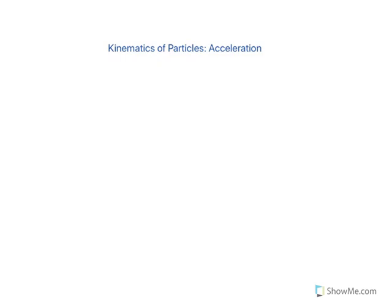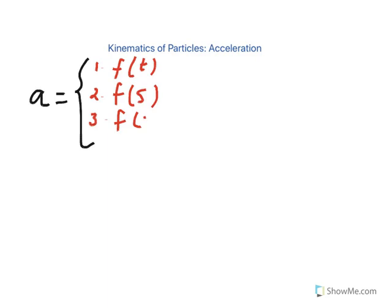We want to talk about particle kinematics and specifically about acceleration. If the equation of motion of a particle is presented by its acceleration, that acceleration could be given in different forms — it could be a function of time, a function of position, a function of velocity, or the most straightforward case, a constant. We want to look at each case and see how we find velocity and position when acceleration is given.